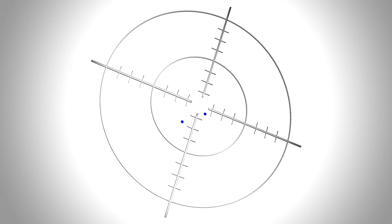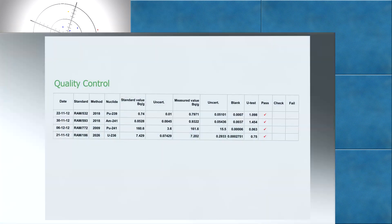RADEC LIMS incorporates a range of quality control functions using QC data entered by the analyst. Data are compared with the integrated reference sample or standards database, and are then quality assessed based on the statistical U-test.